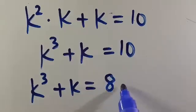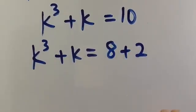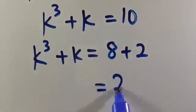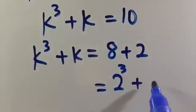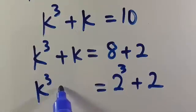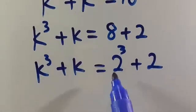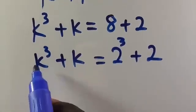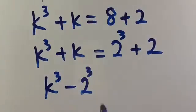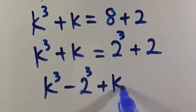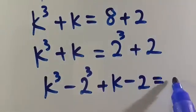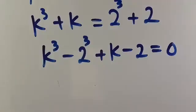We can simplify 10 as 8 plus 2, then express 8 in base 2 as 2 to the power of 3. So we have 2³ plus 2 equals k³ plus k. Let's group these terms and rearrange: k³ minus 2³ plus k minus 2 equals 0.